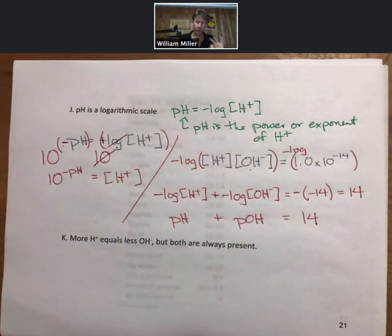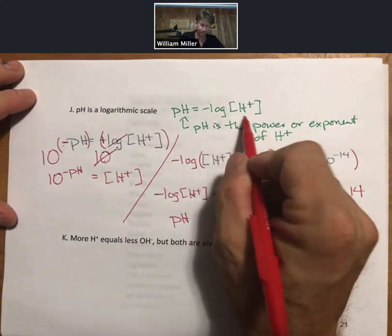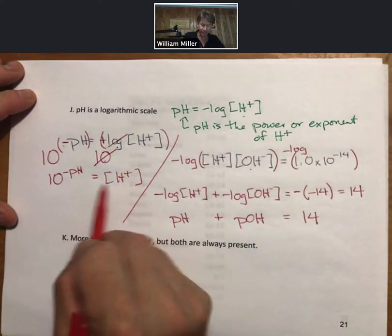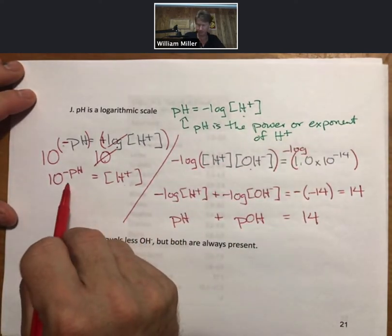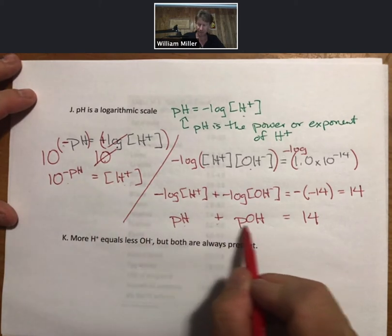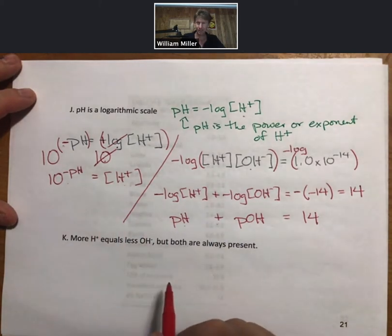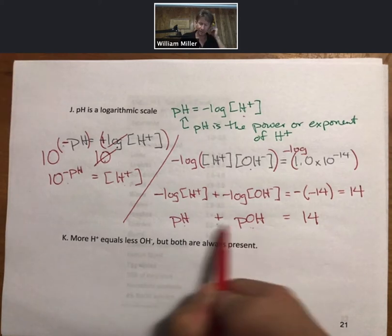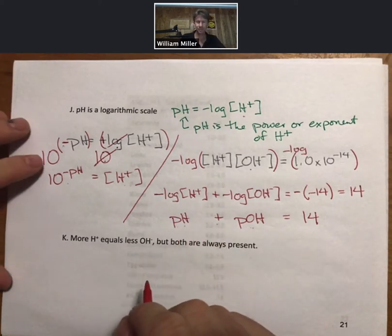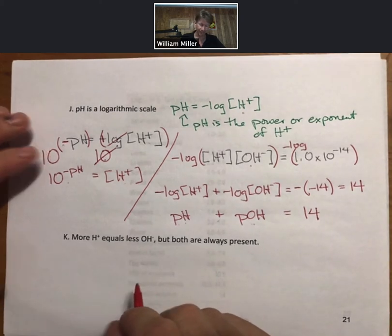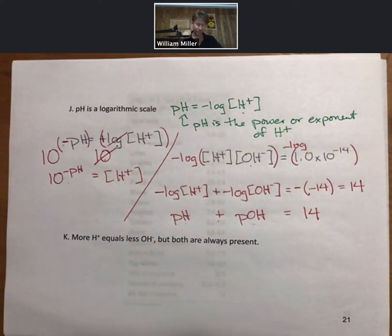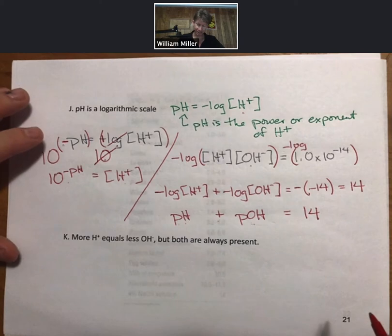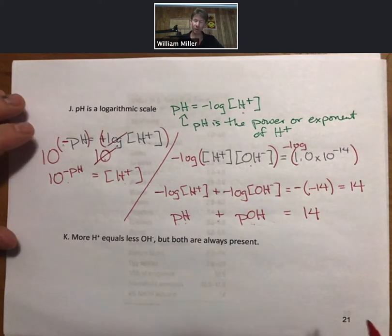There are three equations that we use quite a bit now. The pH equation, the hydrogen ion concentration in terms of pH, and pH plus pOH equals 14. Because it'll turn out sometimes it's easier to find the pOH when we're on our way to pH. And as always, more hydrogen ion equals less hydroxide ion, but both are always present.